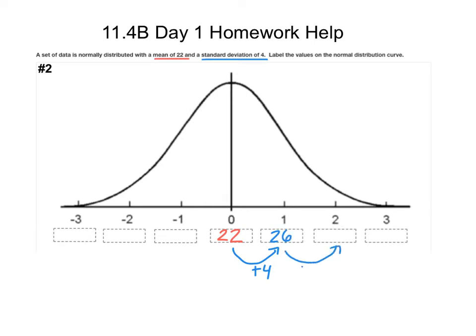Then 26 plus 4 would be 30. You can get that last value on your own. To get the standard deviations below the mean, you subtract 4. So one standard deviation below the mean of 22 would be 22 minus 4, which is 18. Two standard deviations below, we just subtract another 4, and 18 minus 4 is 14. You can get that last value on your own.